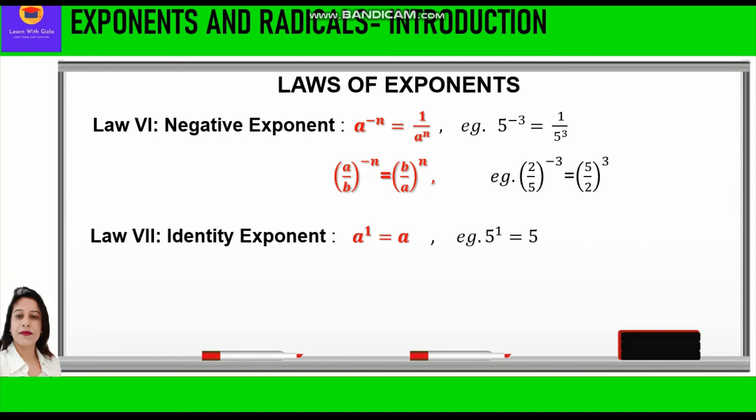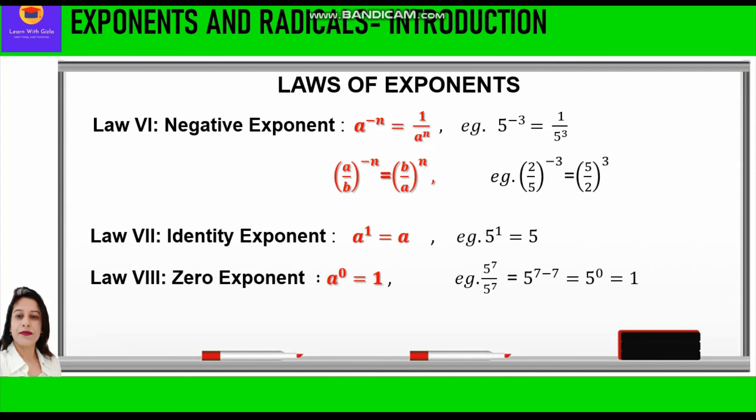The seventh law of exponents is the identity exponent. According to it, a raised to power 1 is equal to a. For example, 5 raised to power 1 is equal to 5. The eighth law of exponents is the zero exponent. According to it, a raised to power 0 is equal to 1.